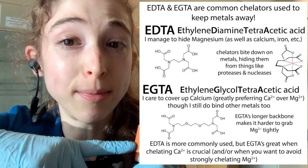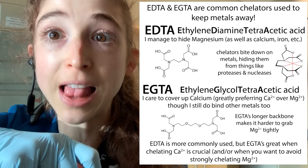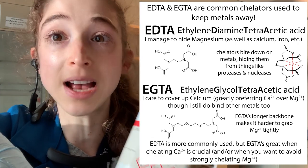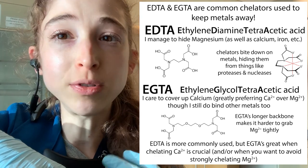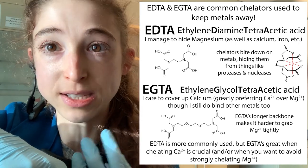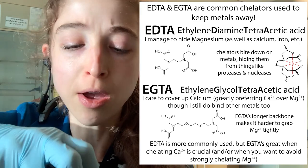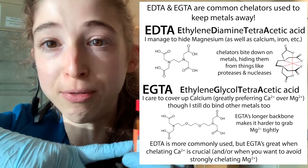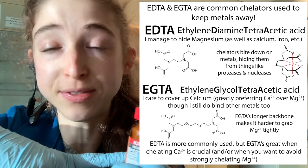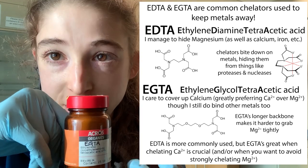EGTA can also come in handy if you're studying a protein that is a metalloprotein that uses a metal like magnesium, or maybe iron. And you want to be able to protect those and use this magnesium-using enzyme, but still be able to get rid of calcium. So EGTA is very helpful in those situations.